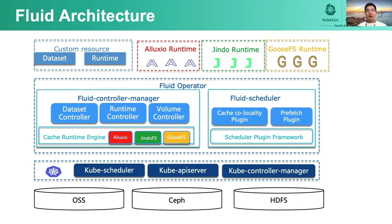Hi everybody, I'm Yuan Dongxi from Tencent Cloud. Thanks to Yang Ce for explaining what the Fluid project can solve. Now let me introduce the architecture of Fluid. From top to bottom, the user needs to define two custom resources: one is dataset and another is runtime. The relationship between dataset and runtime is one-to-one. So far, we support three kinds of runtime: Alluxio runtime, Jindal runtime, and GooseFS runtime.